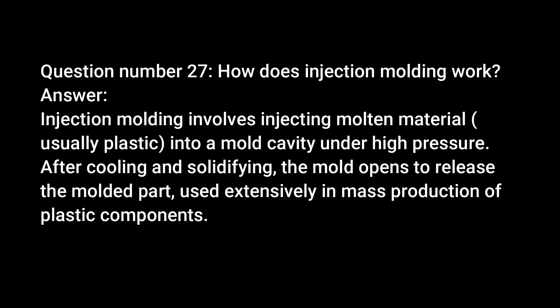Question number twenty-seven: How does injection molding work? Answer: Injection molding involves injecting molten material — usually plastic — into a mold cavity under high pressure. After cooling and solidifying, the mold opens to release the molded part. It is used extensively in mass production of plastic components.